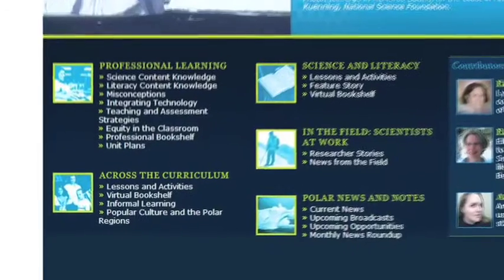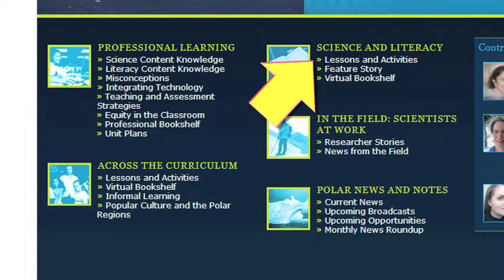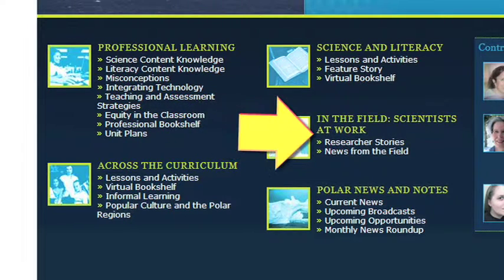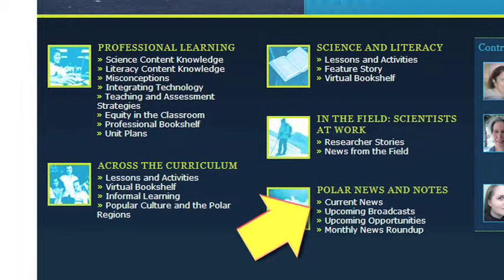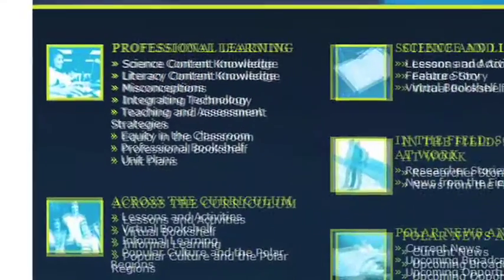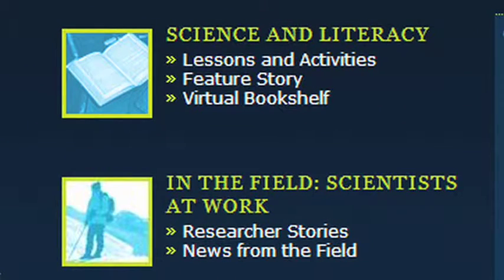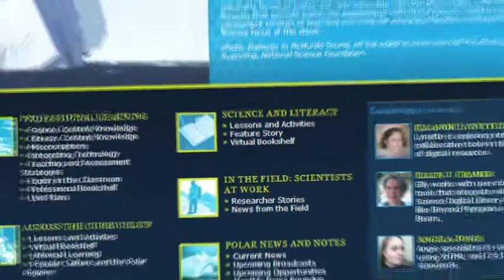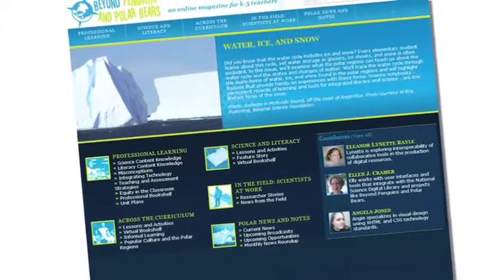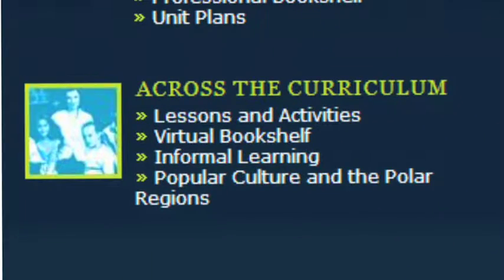There are five departments: professional learning, science and literacy, across the curriculum, in the field, scientists at work, and polar news and notes. Under each of the department titles you'll see column titles such as science content knowledge, misconceptions, lessons and activities, feature story, and researcher stories, each providing ways to improve student achievement in science, as well as in reading comprehension and oral and written discourse abilities. You can click on each column link to find information that relates to the theme of that issue of the magazine.